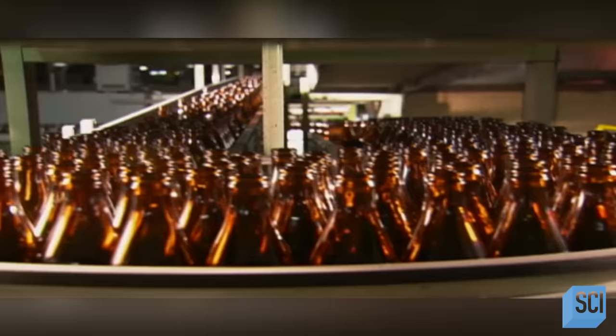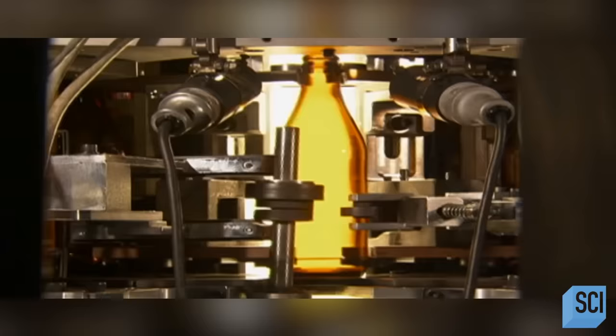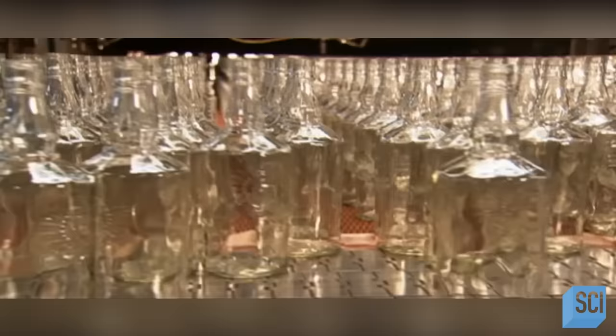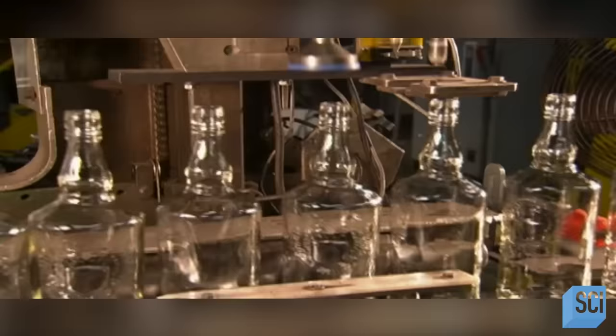The bottles now line up in single file to head into the automatic inspection station. As the machine spins each bottle, cameras and probes check for imperfections such as cracks or bubbles. The inspection equipment then examines the top to check dimensions and ensure the threads for the screw cap are molded correctly.